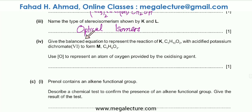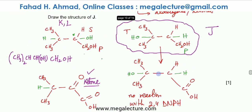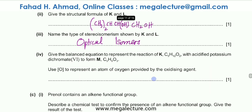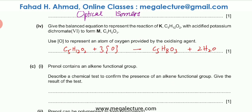Part B(iv) asks for the balanced equation for the reaction of K with acidified potassium dichromate(VI) to form M, using [O] to represent oxygen from the oxidizing agent. The balanced equation is: C5H12O2 + 2[O] → C5H10O3 + H2O. Water is produced because hydrogens are lost and combine with oxygen.